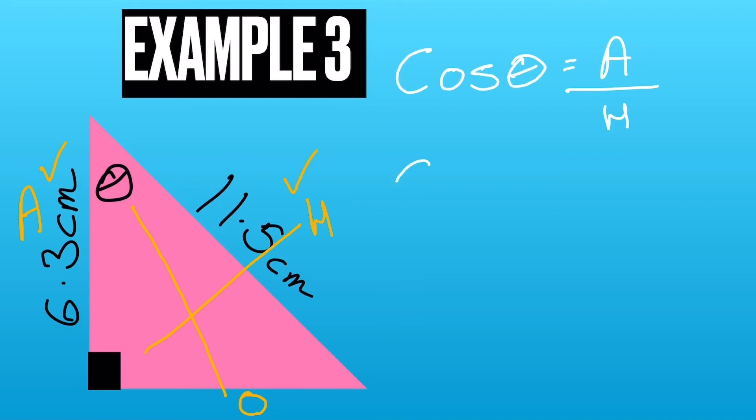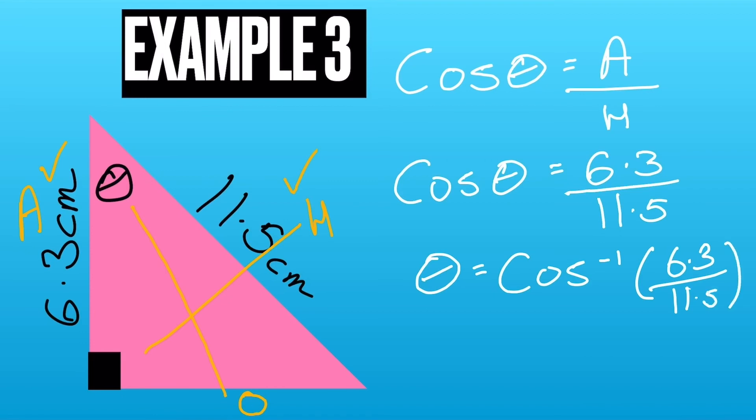So cos theta equals 6.3 over 11.5. So theta is the inverse cos or known as the arc cos of 6.3 divided by 11.5. If you do that in the calculator, you should get the answer which is shown on screen now.